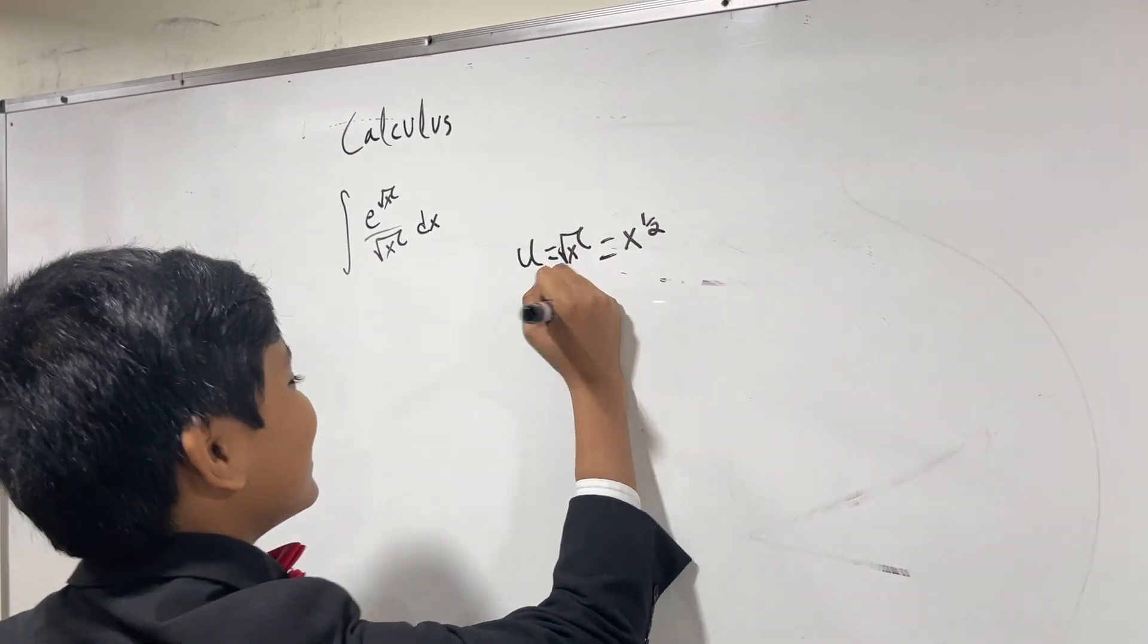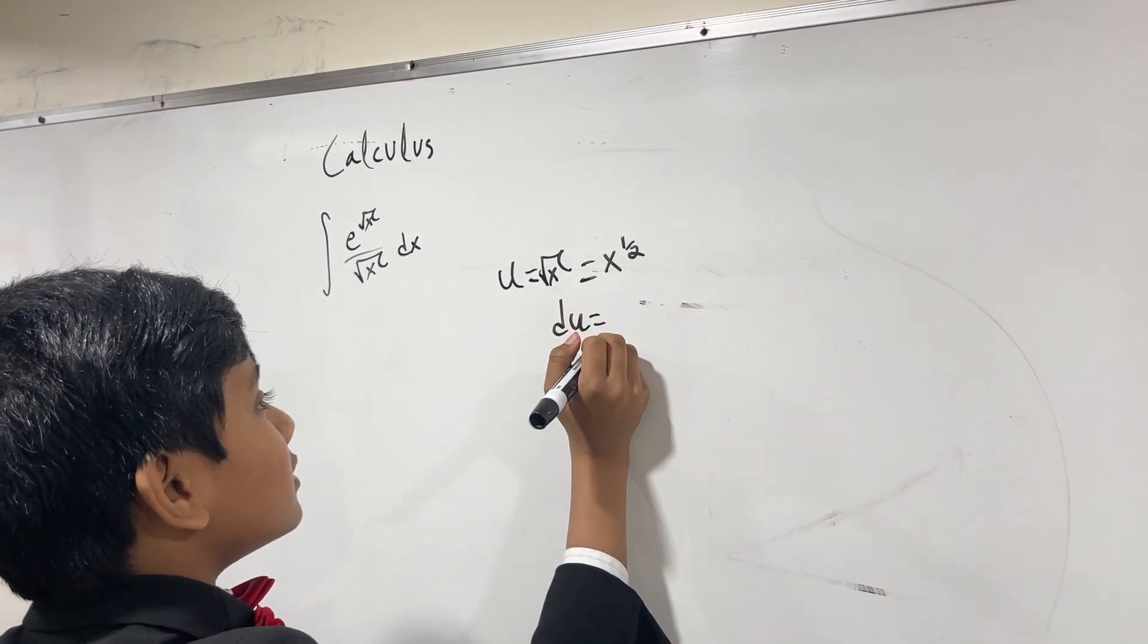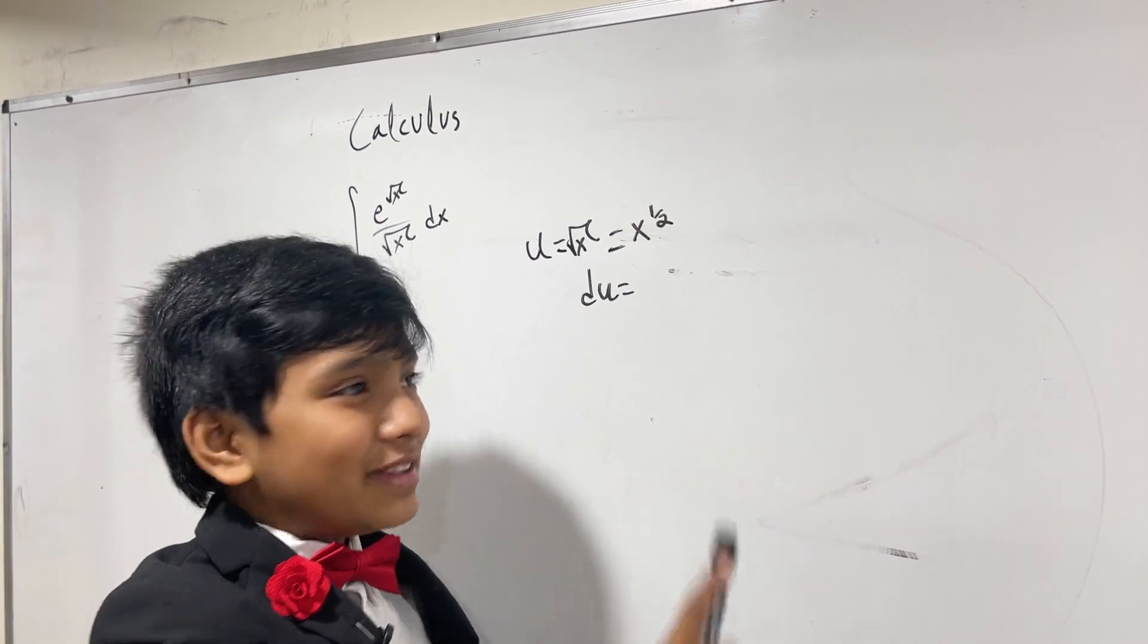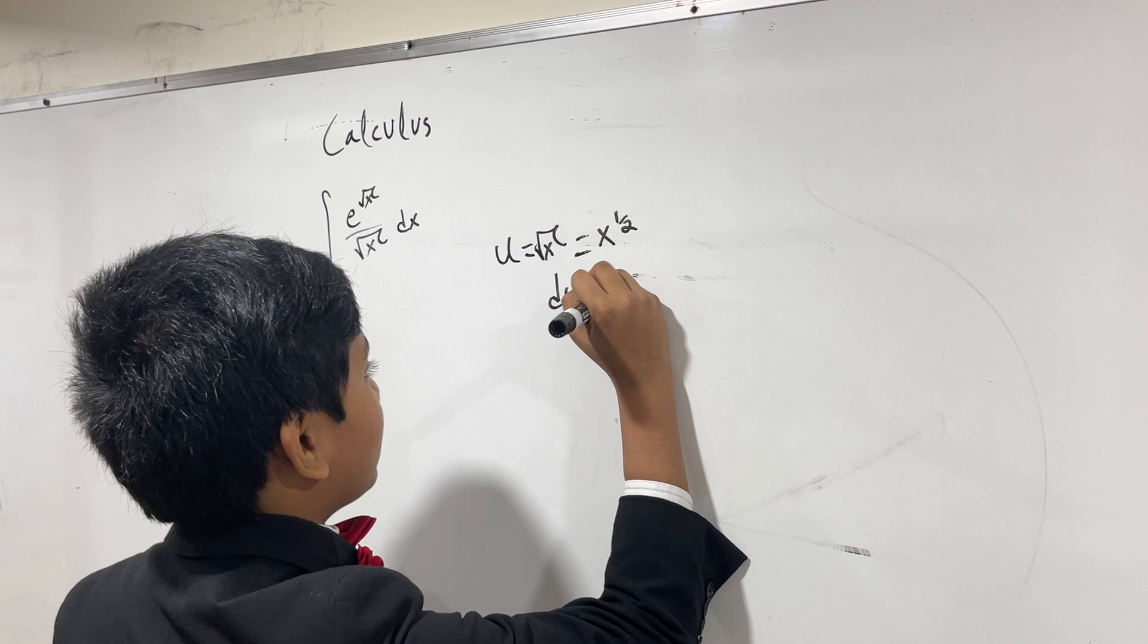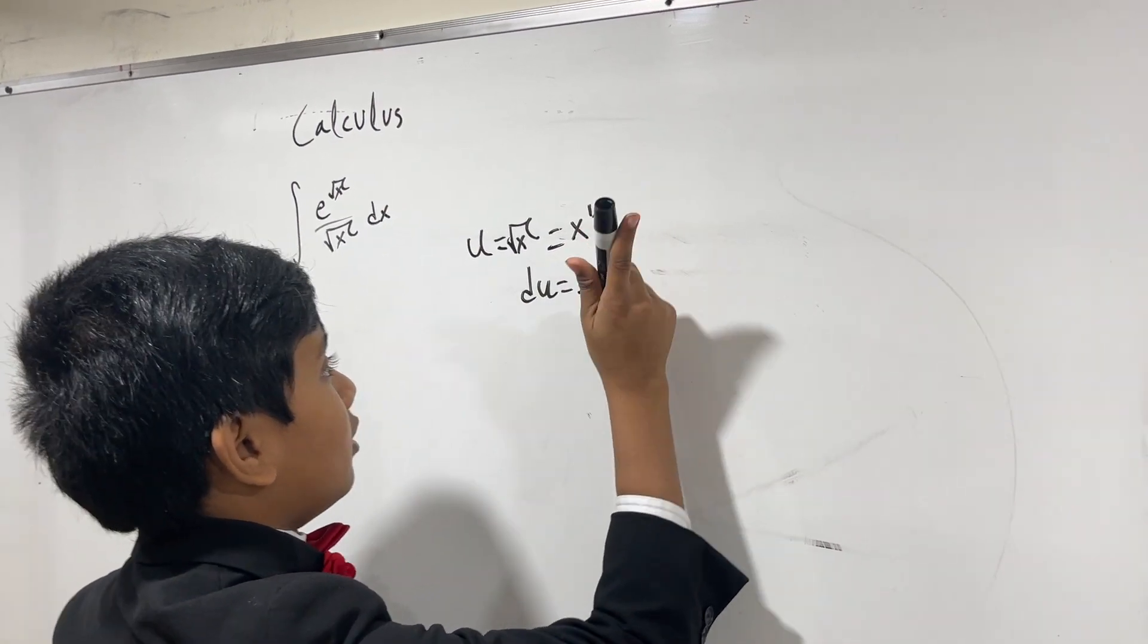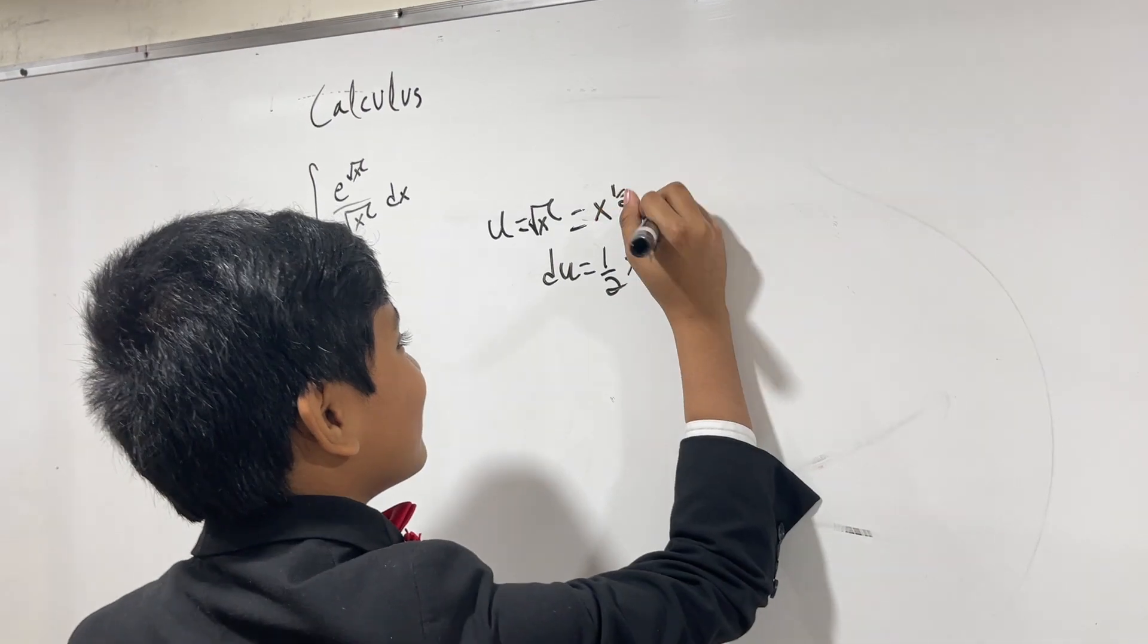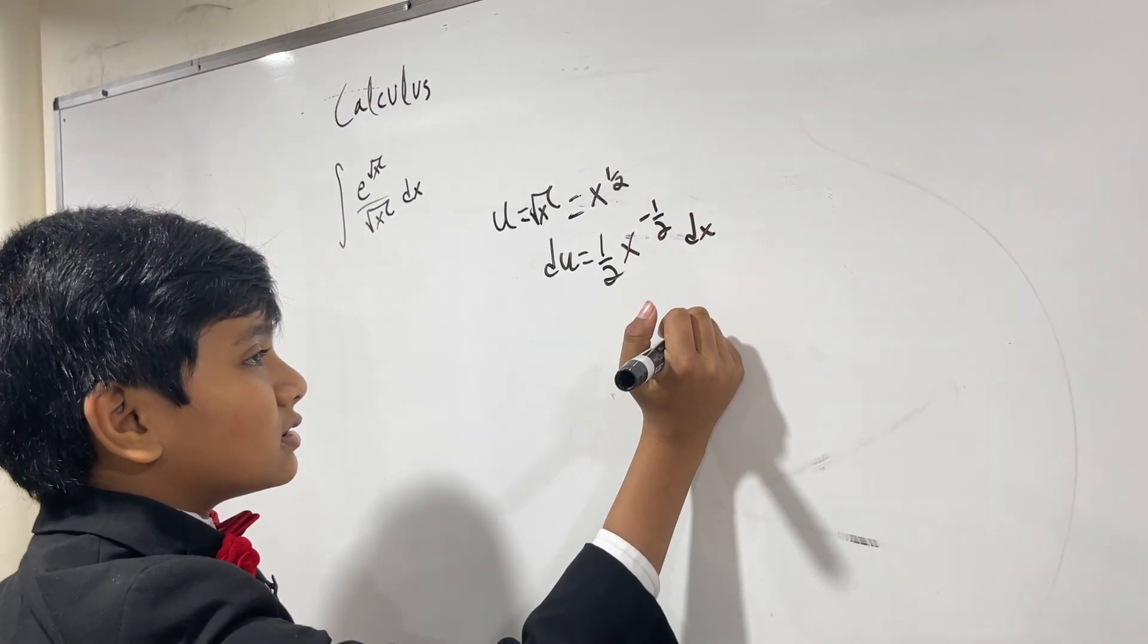Okay. So, that means that du is equal to... How do we do the power rule again? Okay. Well, we take the exponent, we put it in the front, then we subtract one. Okay. So, we have one half x to the one half minus one is negative one half. Okay. I'm finding this very fun. Then, we have dx.